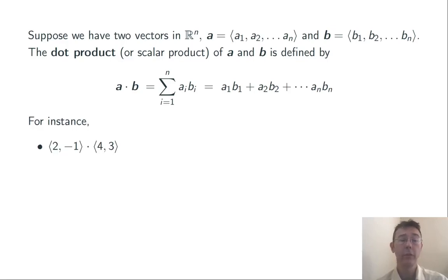For instance, ⟨2, -1⟩ · ⟨4, 3⟩ = (2)(4) + (-1)(3) = 5. Notice that the result of the dot product of two vectors is a scalar. Sometimes we call the dot product the scalar product for that reason.